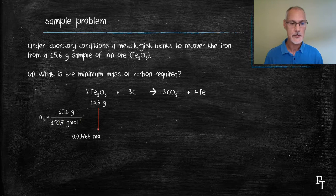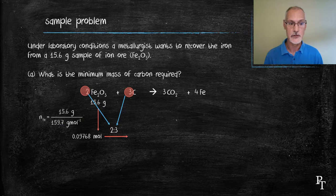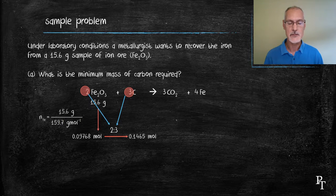So performing that operation, I arrive at the moles of iron oxide. My next step is to consult the coefficients in the equation. A 2 to 3 ratio exists between the moles of iron oxide and the moles of carbon. So I'm going to multiply the 0.0968 by 3 and divide by 2, or multiply by 1.5. And that now arrives at my moles of carbon.